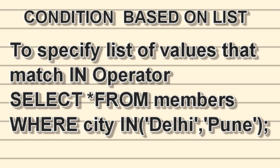The next condition type is based upon a list, using the IN operator. The IN operator selects values that match any value given in the list. Suppose we have a members table with different cities — we check whether a city is in a desired list. The query is: SELECT * FROM members WHERE city IN ('Delhi', 'Pune'). If those cities are available in the list, it will show the matching output.